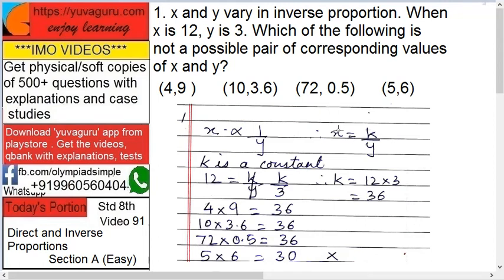Now assume x equals to say 5 and y equals to say 2. Suppose if 5 equals to k upon 2, then if 2 increases to 4, what will happen? Denominator increases, so the answer will decrease. This will be lesser. That's the meaning.